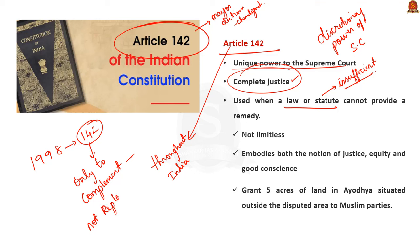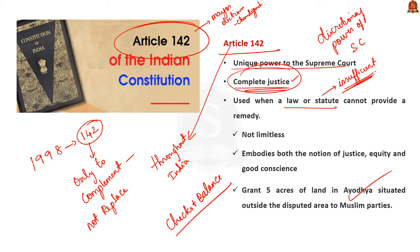Article 142 empowers the Supreme Court to take necessary actions to ensure justice where existing law may not be sufficient, and it works as a system of checks and balance with the government or legislature. This article was related to several important cases, for example the Bhopal gas tragedy case, the Babri Masjid demolition case, and the liquor sale ban case. Even though Article 142 confers curative powers, its broad scope has led to criticism. The term 'complete justice' is not defined in the Constitution, and unlike the legislature and executive, the judiciary cannot be held accountable for its actions. So the powers conferred under Article 142 could violate the principle of separation of powers.